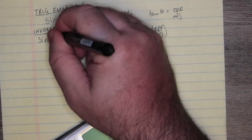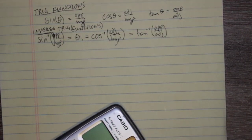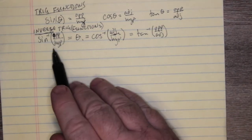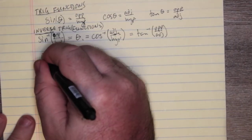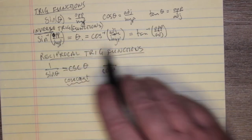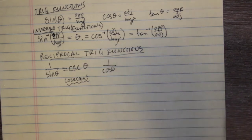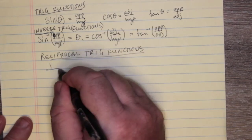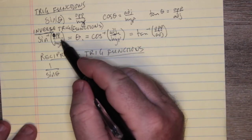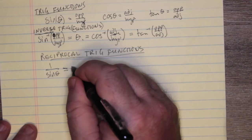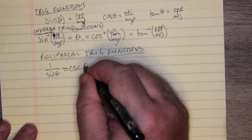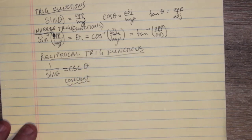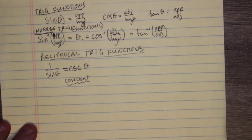People seem to confuse inverse with reciprocal. You cannot confuse inverse trig functions with the reciprocal trig functions — that minus one on inverse trig functions signifies it is an inverse, not an exponent. One over sine theta actually results in a new function called cosecant theta, which we abbreviate csc and spell out as cosecant.